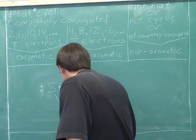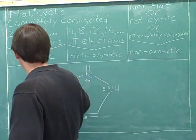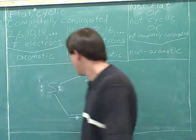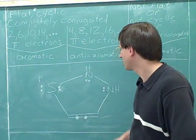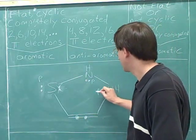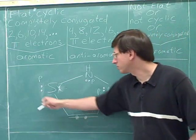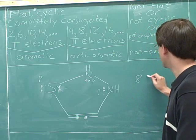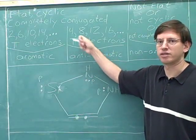We have two pi electrons in the pi bond. The sulfur can use its one p orbital for one of its lone pairs, but then the other lone pair does not count as pi electrons because it can't be put in a p orbital. This nitrogen can put its lone pair in a p orbital, and this nitrogen can also put its lone pair in a p orbital. So we have 1, 2, 3, 4, 5, 6, 7, 8 pi electrons, which means 8 pi electrons total. So this molecule is anti-aromatic.